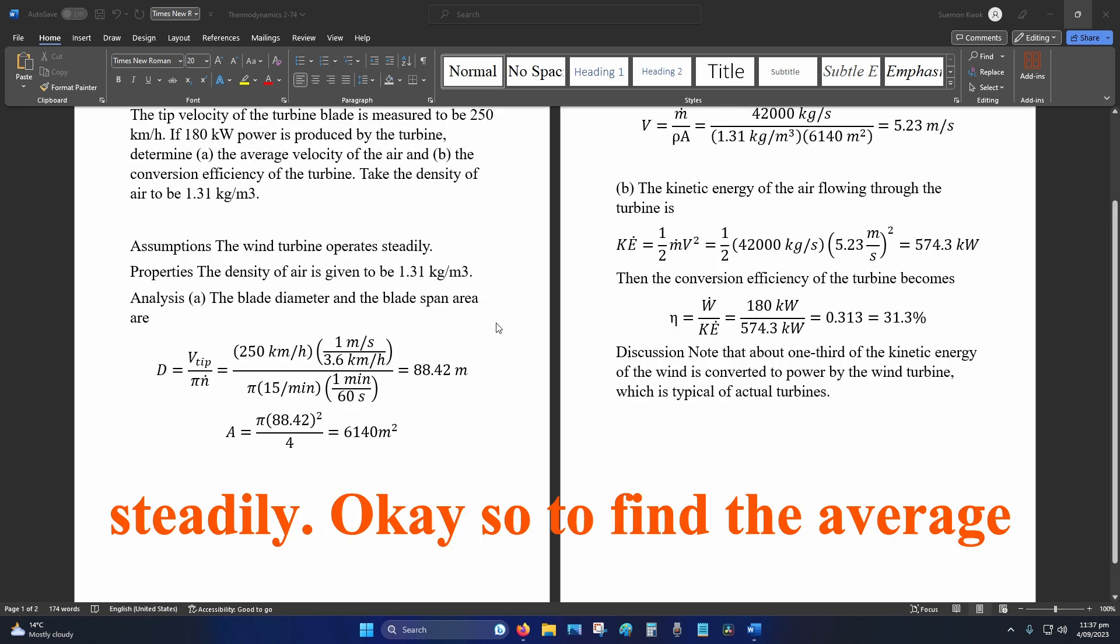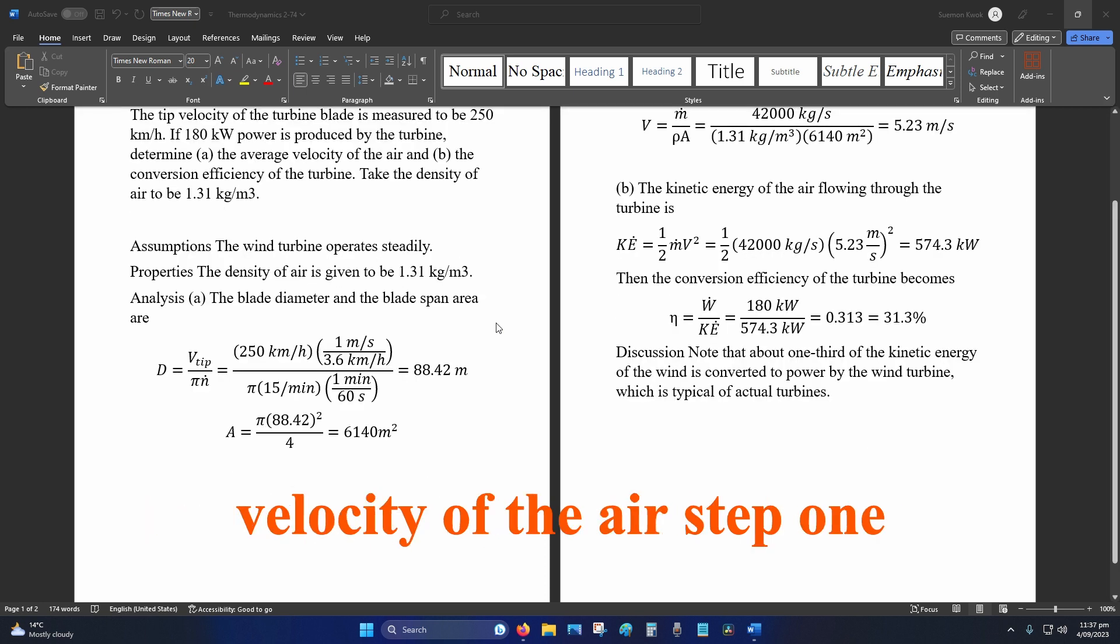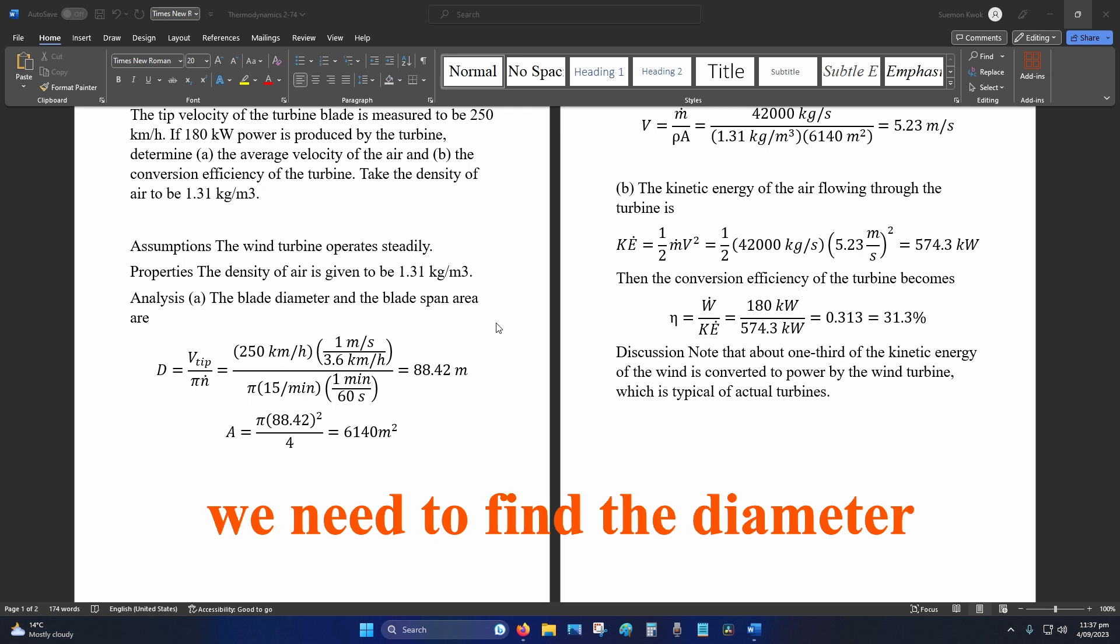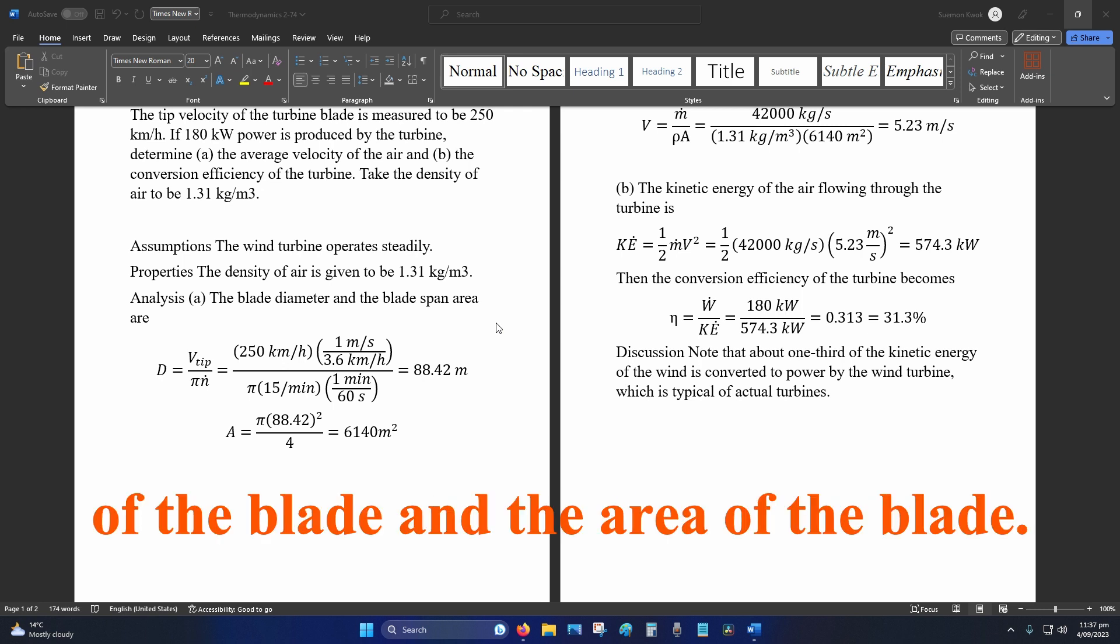Okay, so to find the average velocity of the air, step one, we need to find the diameter of the blade and the area of the blade.